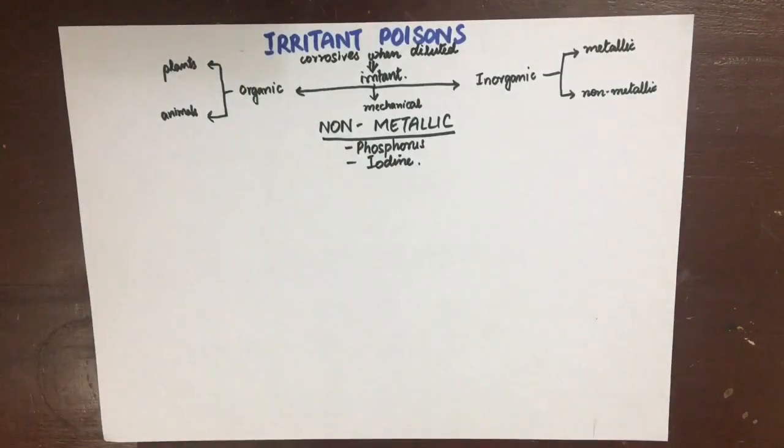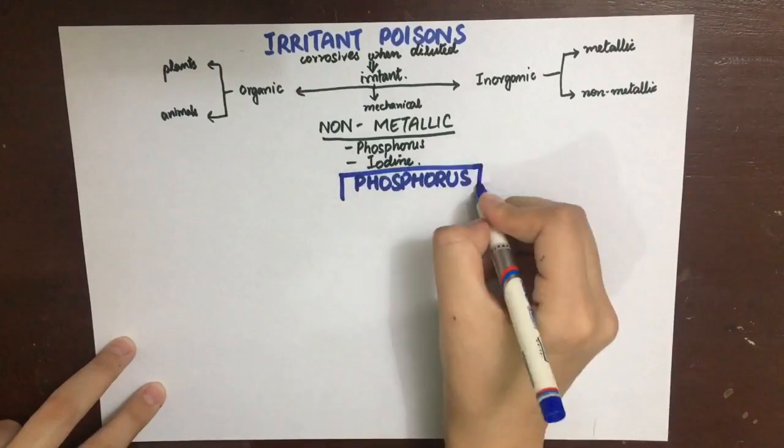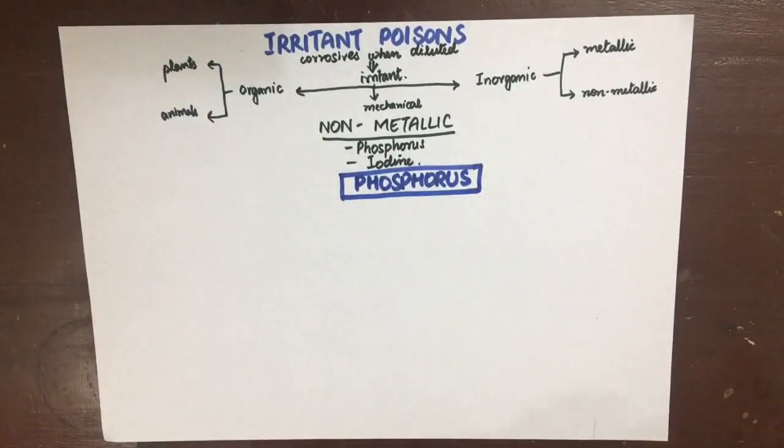In this video we will be studying the first non-metallic poison, that is phosphorus. The next is iodine, which is explained in the next video. Let's see what we have for phosphorus.